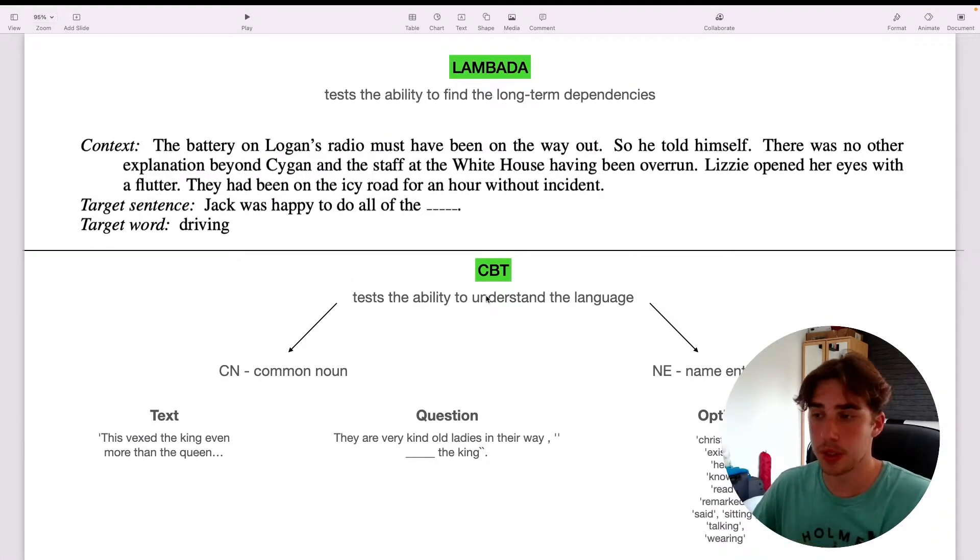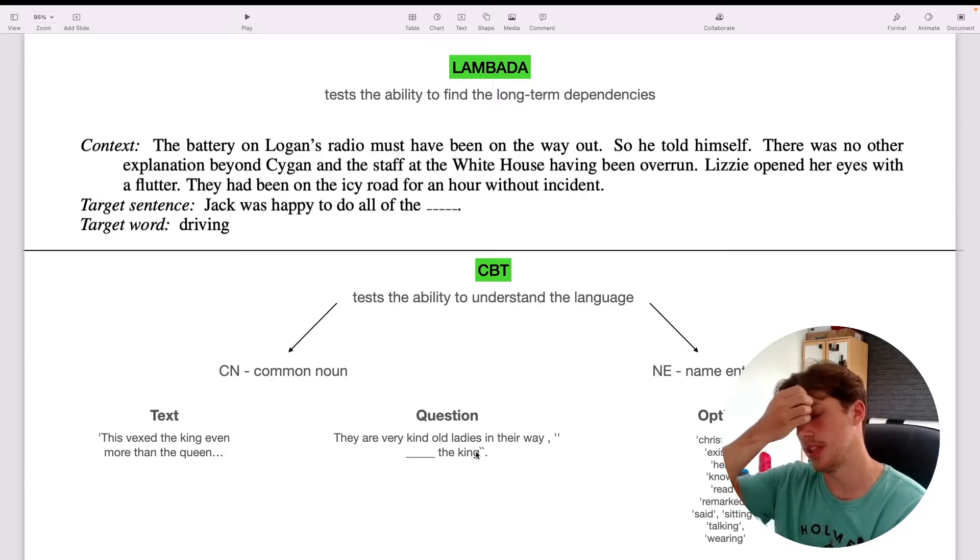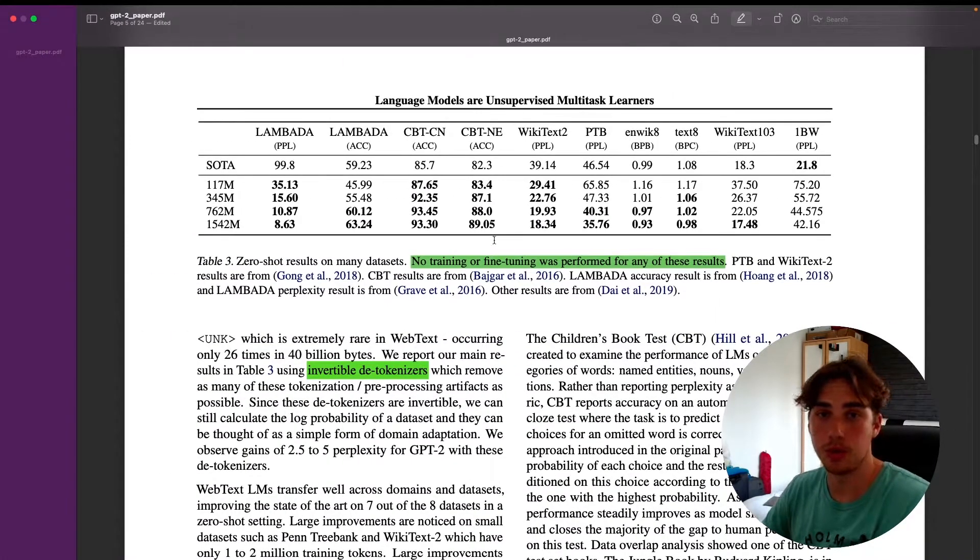The next dataset they use is CBT, which is Children's Book Test. Let me show examples of this. Obviously, if you want to look more into these datasets, I highly recommend seeing the Hugging Face website—they've got all of these NLP datasets open, where you can preview how it looks. CBT is testing the ability to understand the language. They get two options: one is you need to predict the common noun; the other one is the named entity. Again, we pass the text—the question about it—it's not really a question, it's more like the text and a blank space. It's got 10 options to predict from, and it chooses the right one.